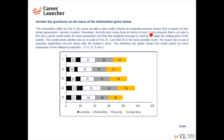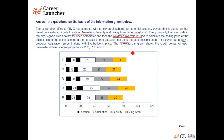A corporation office has come up with a new grade scheme for potential property buyers based on four broad parameters. Every property on sale is given credit points for each parameter and then the weighted average is used to calculate the selling price of the builder. Credit points are allotted on a scale of 0 to 25, where 25 is the best possible score. The buyer has to pay a property registration amount along with the builder price, and we have a graph showing credit points for each of the five properties.